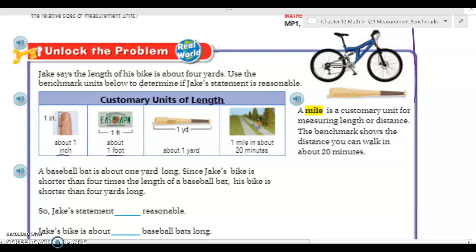Jake says the length of his bike is about four yards. Use the benchmark units below to determine if Jake's statement is reasonable. So first I'm going to circle my numbers, which is four in word form. Next I'm going to underline the question. Now I don't have a question mark, but it is asking me to determine if Jake's statement is reasonable. My keywords are yards, because that's the length of unit I'm working with, and the word reasonable, because that tells me that I'm looking for is Jake correct.